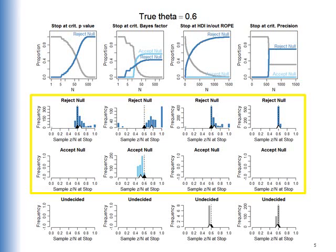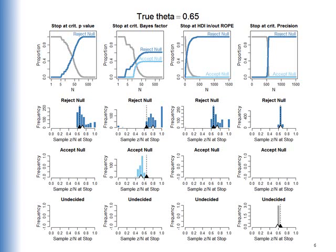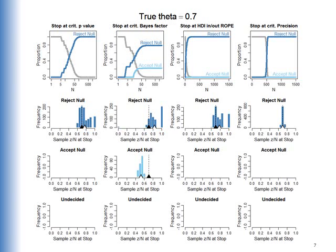The same pattern of results holds up for other values of true thetas. For example, here the true theta is 0.65, and again we get the bias in the estimate for any of the stopping criteria based on accept-reject, but on the far right column, when the stopping rule is when you've achieved critical precision, the estimate is right on target. The same thing happens when theta is 0.7, and so on.